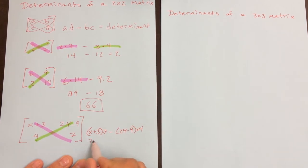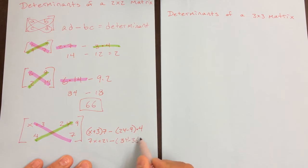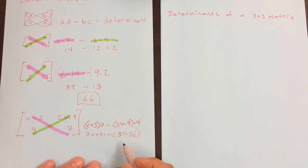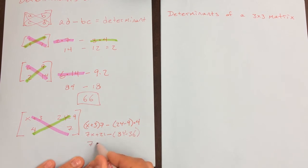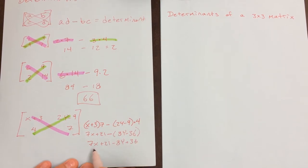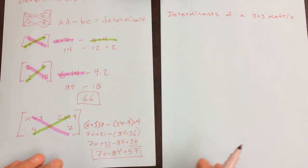Now we're just going to distribute. That gives us 7x + 21 minus (8y − 36). I kept it in parentheses after distributing the 4 to make sure I subtract both terms inside. So it becomes 7x + 21 − 8y + 36. The only like terms are the constants, giving us 7x − 8y + 57. That's the determinant — that's the final answer. It's really as simple as that for the 2x2.